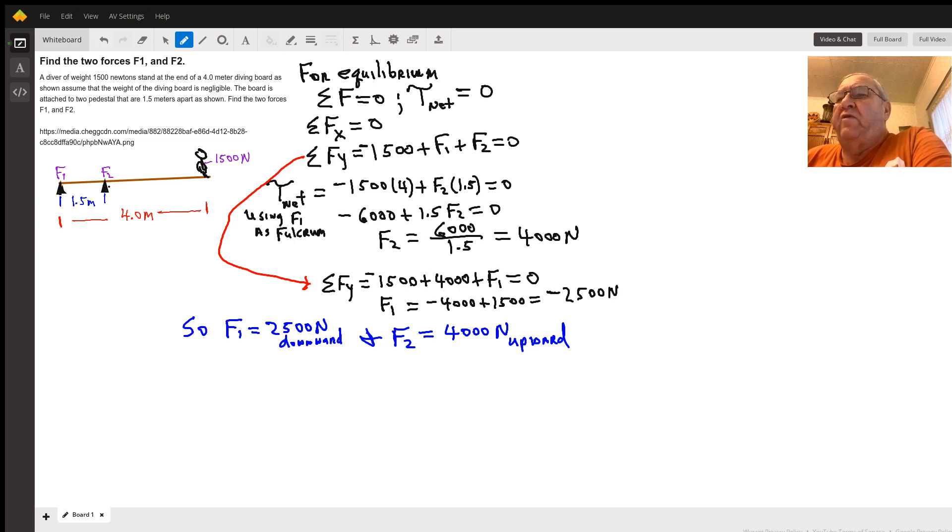4 times 1,500, minus 1,500 is minus 6,000, plus 1.5 F2 equals zero. So solving for F2, we get F2 to be 4,000 newtons, and that would be positive 4,000 newtons, meaning it's going upward.